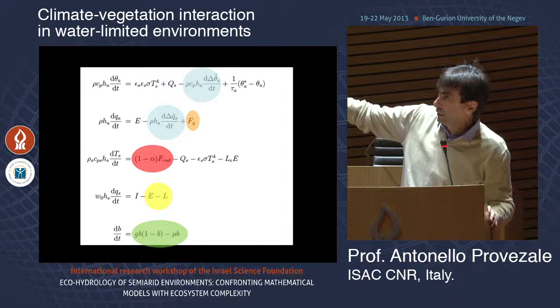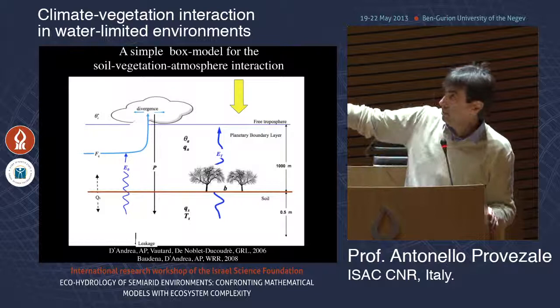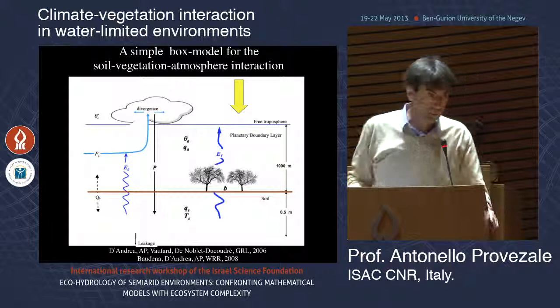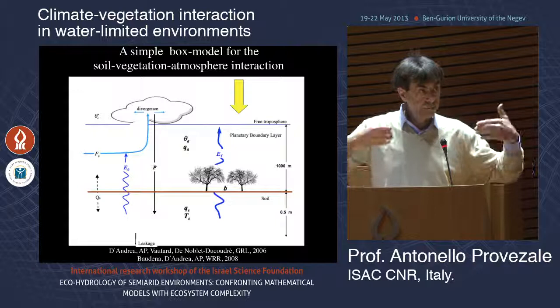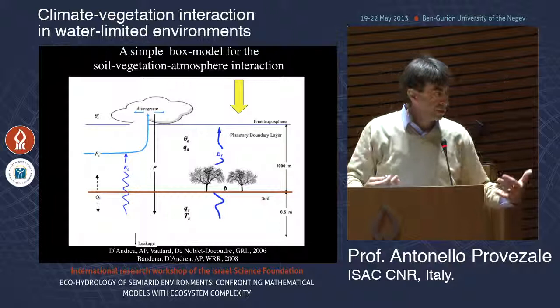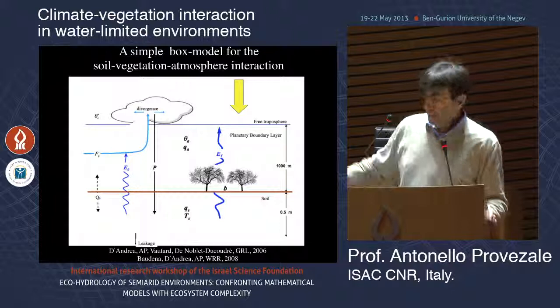An important term is the convection: when the equivalent potential temperature of the PBL is larger than the equivalent potential temperature of the troposphere, you have convection. We simulate convection in the simplest way — convective adjustment — homogenizing the equivalent potential temperature. Evapotranspiration is based on models by Laio, Porporato, and that group.